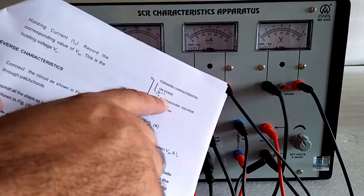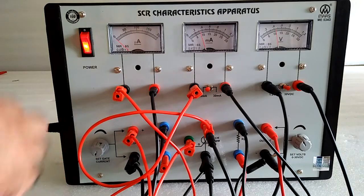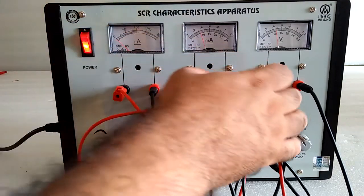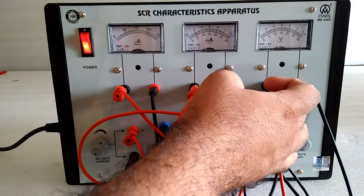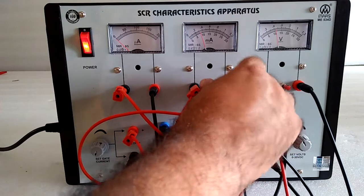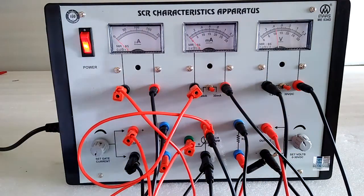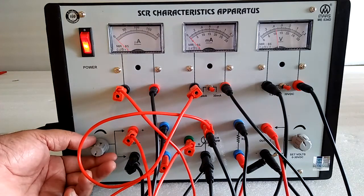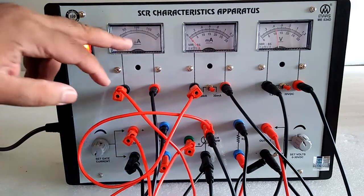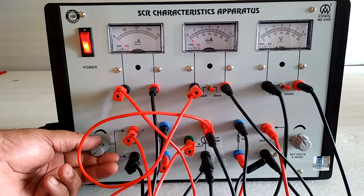After taking these readings, when we apply the gate current, the current will be sharply increasing and volt meter reading will go down. So we have to change the range of the current meter. Now increase the gate current and note down the value of this gate current when the SCR will be fired.